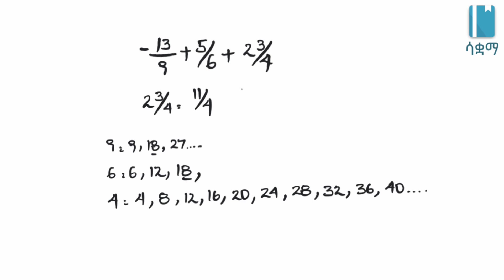We see that 4 times 6 is 24, 6 times 4 is 24, 6 times 5 is 30, 6 times 6 is 36, and 9 times 4 is 36. So 36 is the least common multiple for the three denominators. The least common denominator is 36.